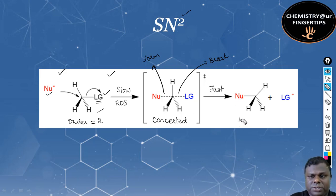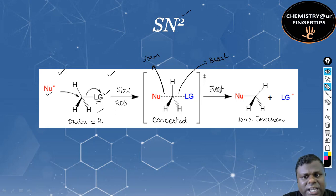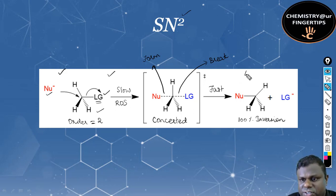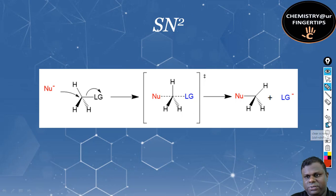The leaving group is on one side and the nucleophile appears on the other side, so this results in 100% inversion. This is called Walden inversion, discovered by Dr. Walden. That summarizes the SN2 reaction.